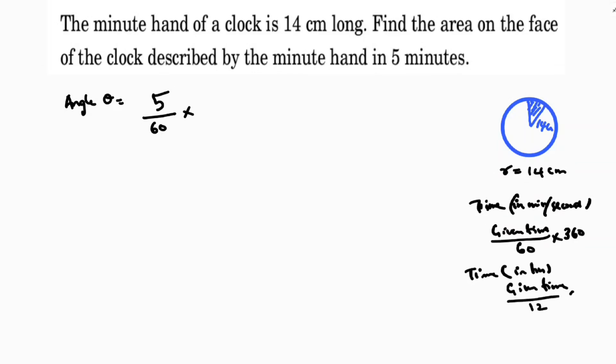By 12 into 360, this is the way we need to find the theta. So 360, 6 into 1, 6 into 6, so theta is 30 degrees. Now, area of a sector - the formula is theta by 360 into pi r square.